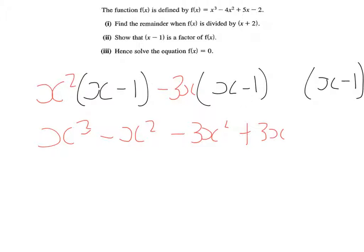I want a five x, which means I need a positive two. And as a check, two times minus one gives you the minus two. So that's all good. So when I put that into an answer, I have x minus one. I have x squared minus three x plus two.